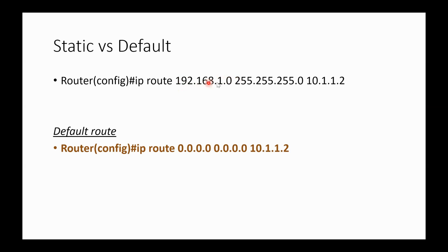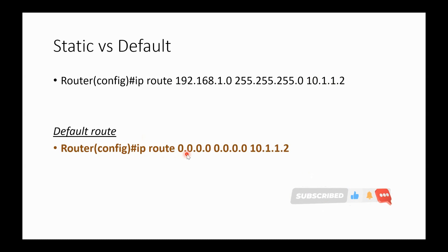Coming to the default route — it is similar to static, but only the routes we advertise will pass to the gateway; other networks will be discarded. The default route uses 0.0.0.0, meaning null — so regardless of any IP address, subnet, or range, all route information is simply passed to the next hop or next gateway. This is the default route.